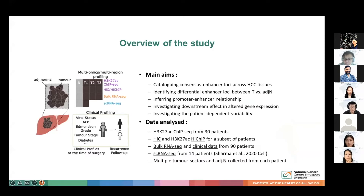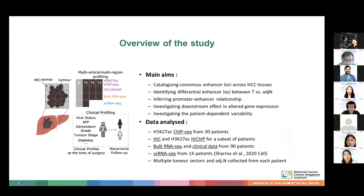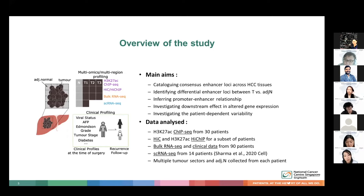The main goal of this study was to investigate the enhancer dysregulation pattern in HCC. To do so, we performed CHIP-seq H3K27 acetyl to indicate the location of active enhancers. We also performed HI-C and HI-CHIP experiments to learn about the distribution of the differential enhancers and the chromatin loops. In addition to the epigenomics dataset, I extended out to include a total of 90 patients to associate the epigenetic changes to the transcriptomic changes by including the bulk RNA-seq data, and I also analyzed the single-cell RNA-seq data of 14 patients from Dr. Sharma's study published in Cell.